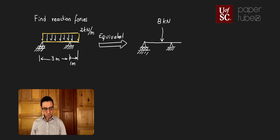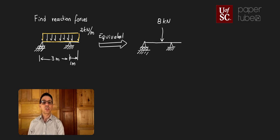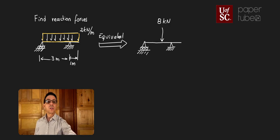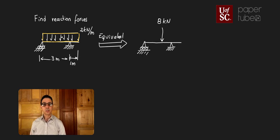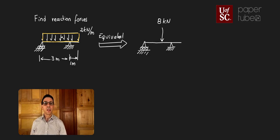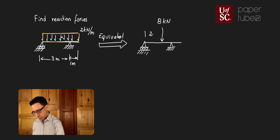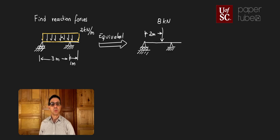The next step is to find the direction. The direction has to be in the same direction as the distributed force. The distributed force is going down, therefore my point load is also going down. And last, we need to find the location. For the case of a rectangle, the centroid is right in the middle of it. Since this is the middle of a 4-meter length, the distance from the left side to the force is 2 meters, and the other half is 2 meters to the right as well.